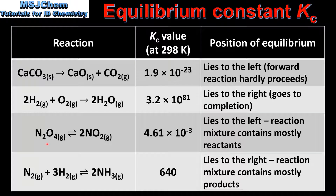Next we have the decomposition of dinitrogen tetraoxide to produce nitrogen dioxide. The value of Kc at 298 K is 4.61 times 10 to the negative 3. This tells us that the equilibrium lies to the left and that the reaction mixture contains mostly reactants. From this table we can see that the higher the value of Kc, the further to the right the position of equilibrium lies.